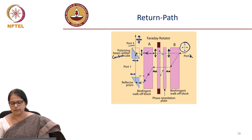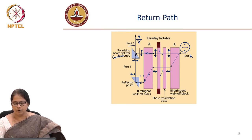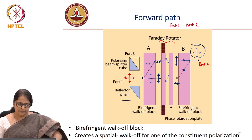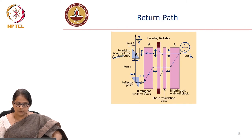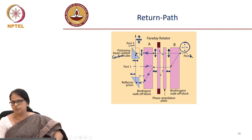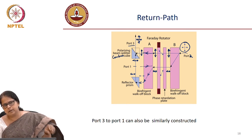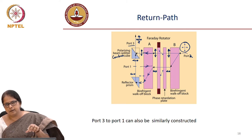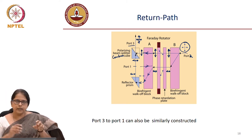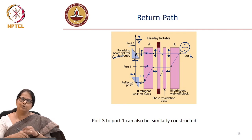So from port 1 you allow transmission to port 2, but from port 2 you are directing everything to port 3, and if you look at the design, there is nothing coming into port 1. This was the port 1 path and there is no return light in the path of port 1 — it is all redirected to port 3. You can also think of some similar combination of micro-optic devices to reconstruct the path from port 3 to port 1.